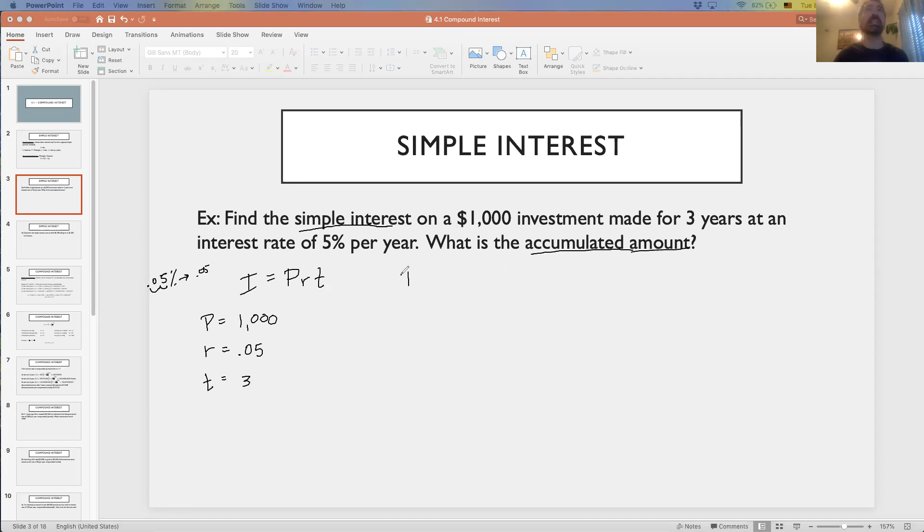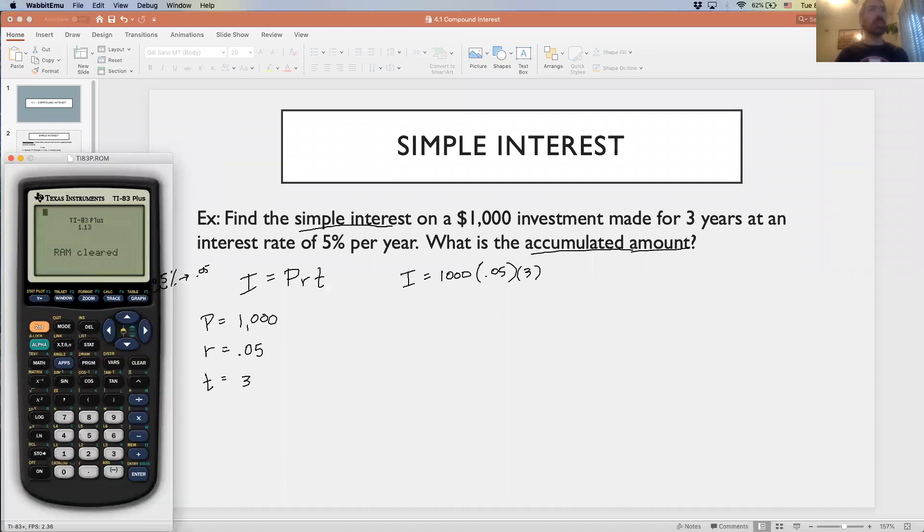Once we identify all of our variables, then it should be a matter of just plugging into that formula. I is equal to 1,000 times 0.05 times 3. As far as formulas go, when we're running our calculations, especially in this chapter, I recommend that you have a good calculator that you know how to operate. I would recommend the TI-83, TI-84. That has a lot of nice features that you will find handy in this chapter as well as when we get to the chapter on matrices.